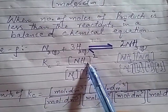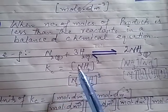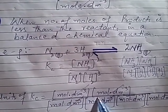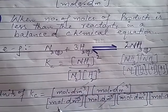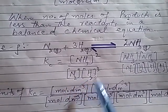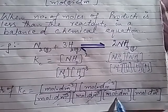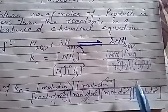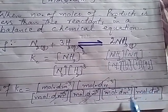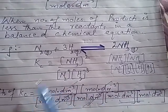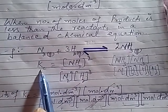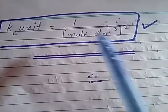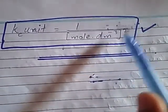Now, this number of moles represents the concentration unit. Let us write the concentration units. For ammonia: mole per decimetre cube × mole per decimetre cube in the numerator. For nitrogen: mole per decimetre cube, and for hydrogen: mole per decimetre cube × mole per decimetre cube × mole per decimetre cube in the denominator. After cancellation, the remaining unit is 1/(mole per decimetre cube)², that is, one by (mol dm⁻³)².